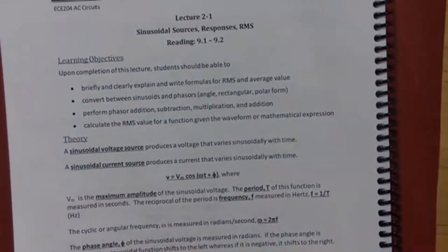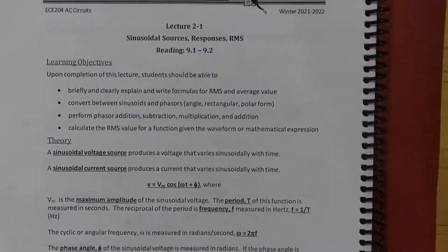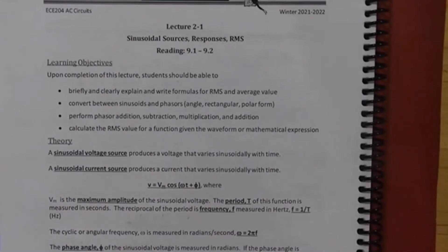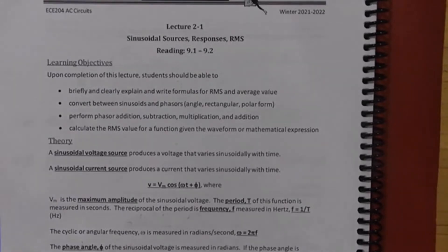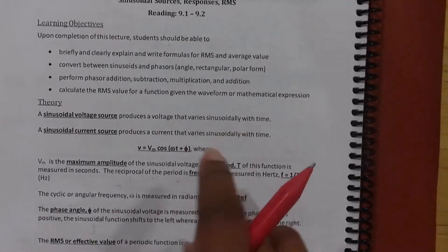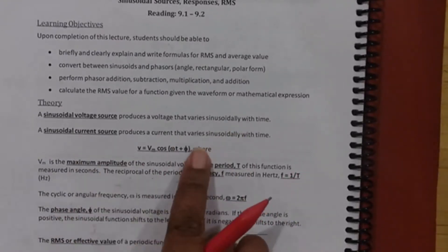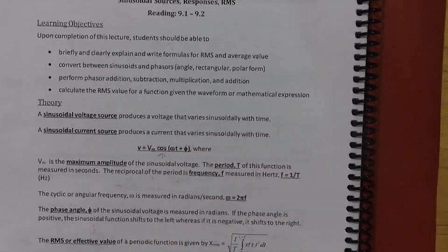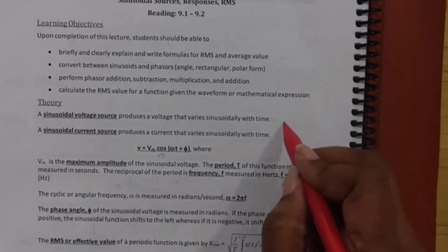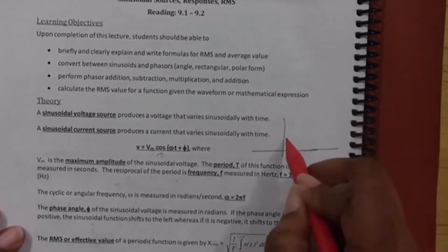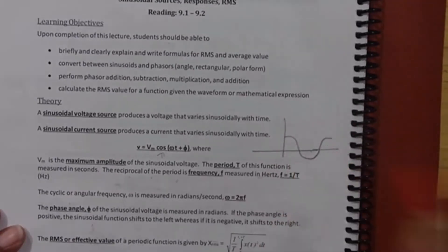Let's talk about sinusoids — you probably covered this in trig, calculus, or EC 180. Sinusoids are going to become our phasors, so this is the beginning of our phasor analysis. Because this is AC circuits, your sources are sinusoidal. Even though we call them sinusoidal voltage or current sources, we always use a cosine. That's the standard — when I say sinusoid, I mean cosine.